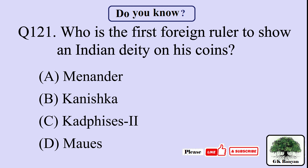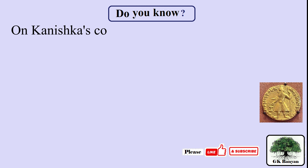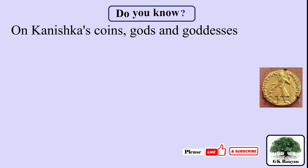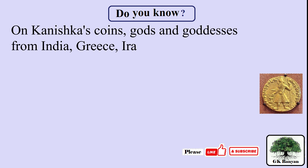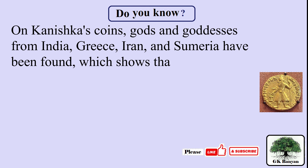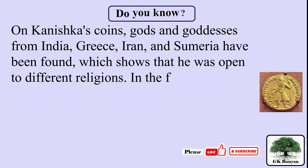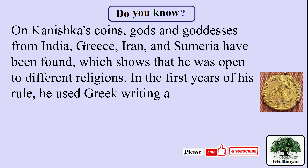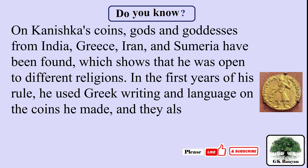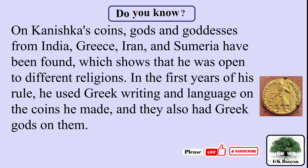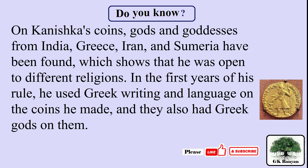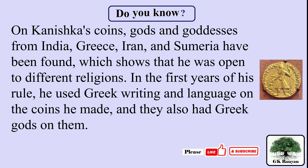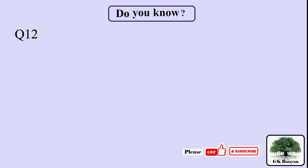The right answer is B. Kanishka. On Kanishka's coins, gods and goddesses from India, Greece, Iran and Sumeria have been found, which shows that he was open to different religions. In the first years of his rule, he used Greek writing and language on the coins he made and they also had Greek gods on them.